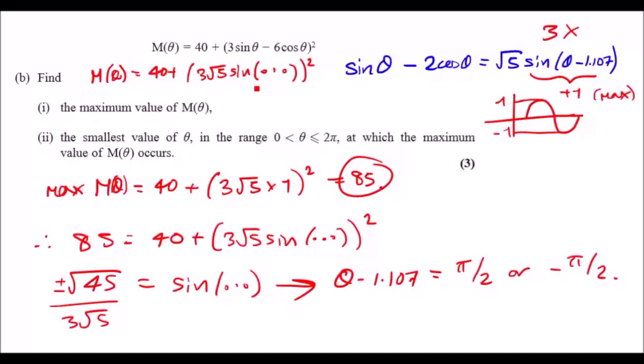And then it tells you that the angle has to be between 0 and 2π. So if you have to make θ the subject, you're going to add 1.107 across.